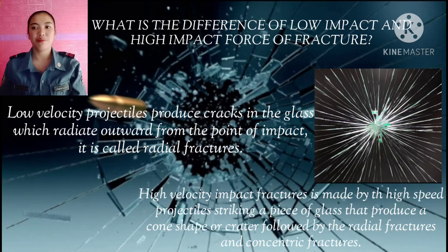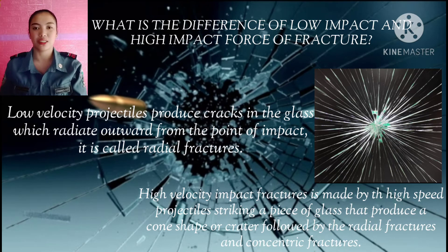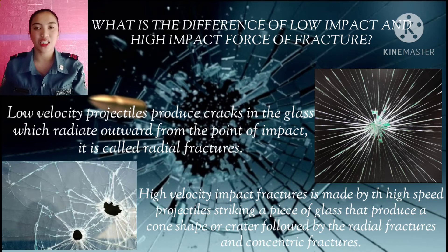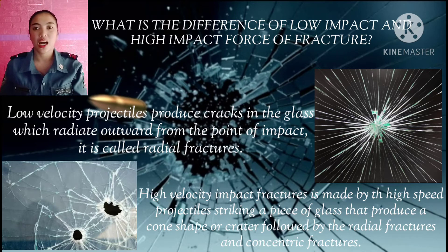In high velocity impact fractures, high speed projectiles strike a piece of glass and produce a cone shape or crater, followed by radial fractures and concentric fractures. With high velocity, you can see a hole, a cone shape or crater, as well as both radial and concentric fractures — unlike with low velocity impacts.